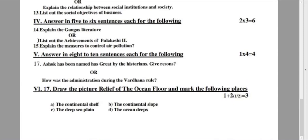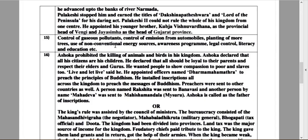Question number 15: Explain the measures to control air pollution. Control of gaseous pollutants, control of emission from automobiles, planting of more trees, use of non-conventional energy sources, awareness program, legal control, literacy and education.